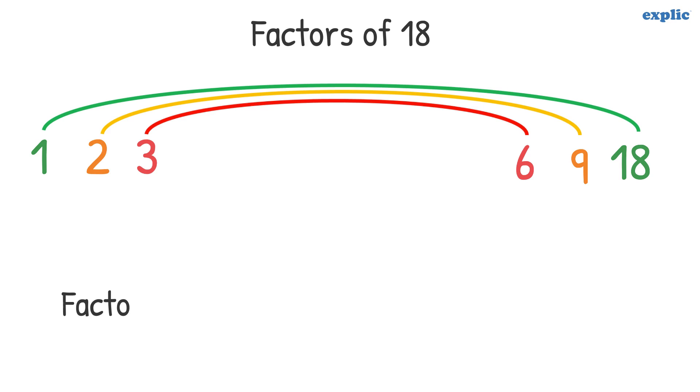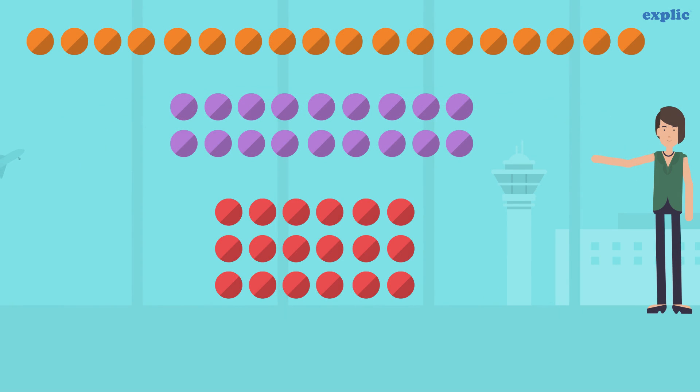Hence, factors of 18 are 1, 2, 3, 6, 9 and 18. The factor diagram shows that we can arrange the number 18 in 3 different rectangles.